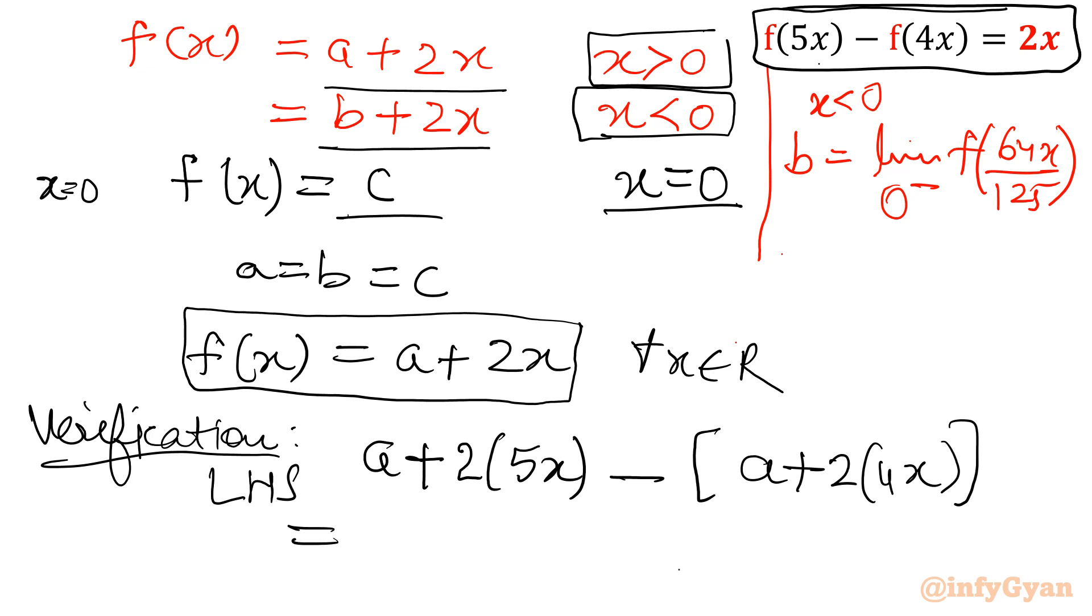So a plus 10x minus, in bracket, a plus 8x. That will give us, a will be cancelled out, 10x minus 8x equals 2x which is our RHS. That means whatever we have calculated, we have found out that is absolutely correct.